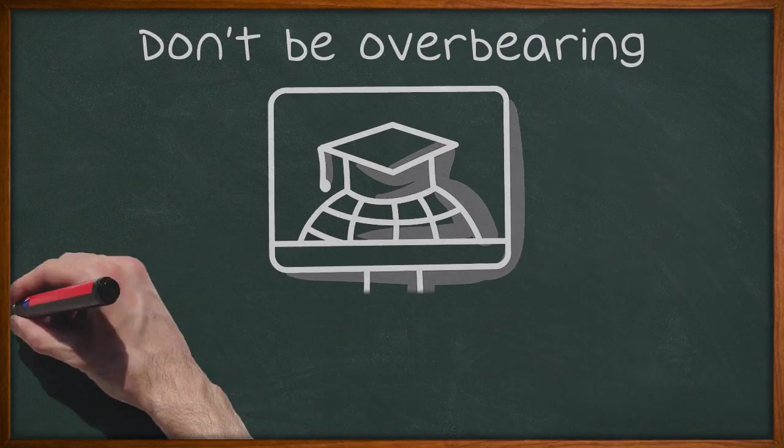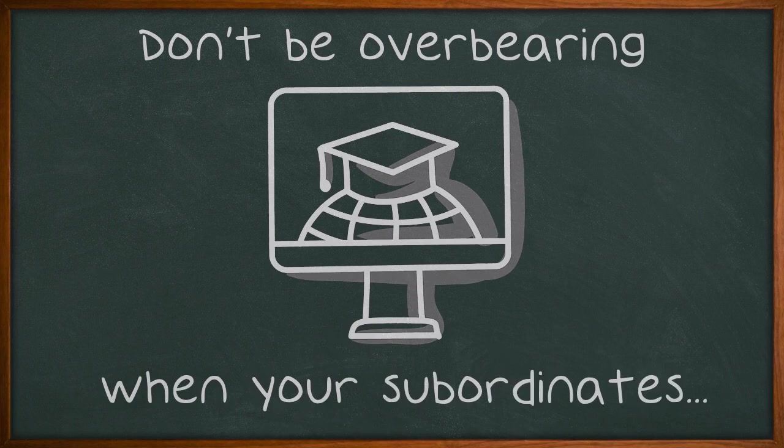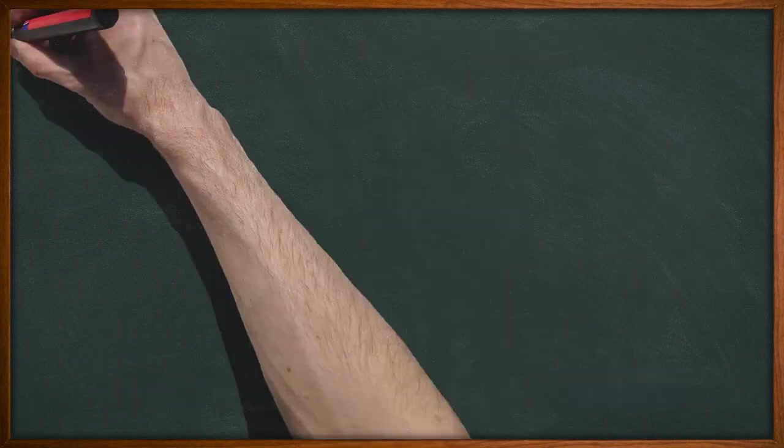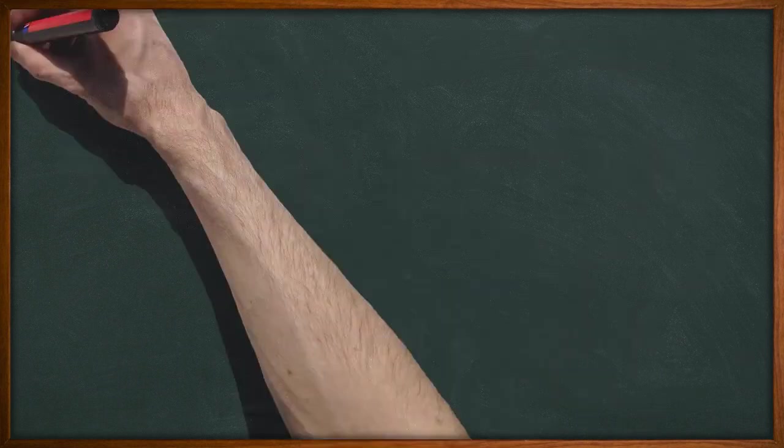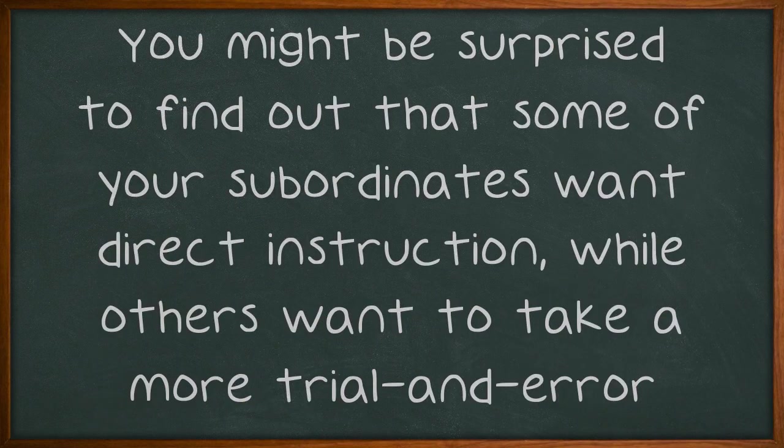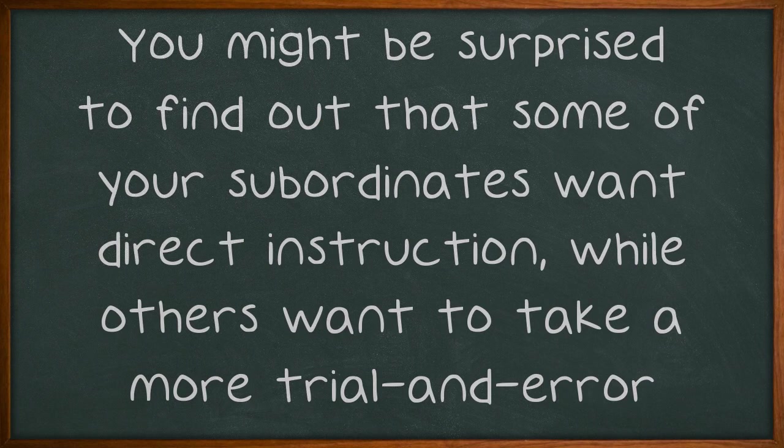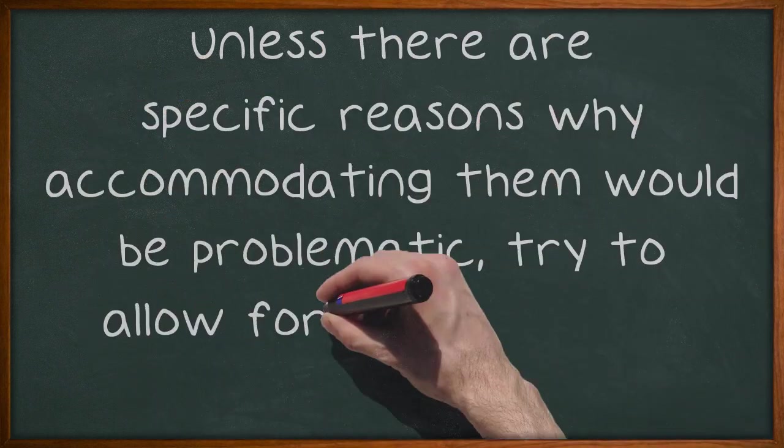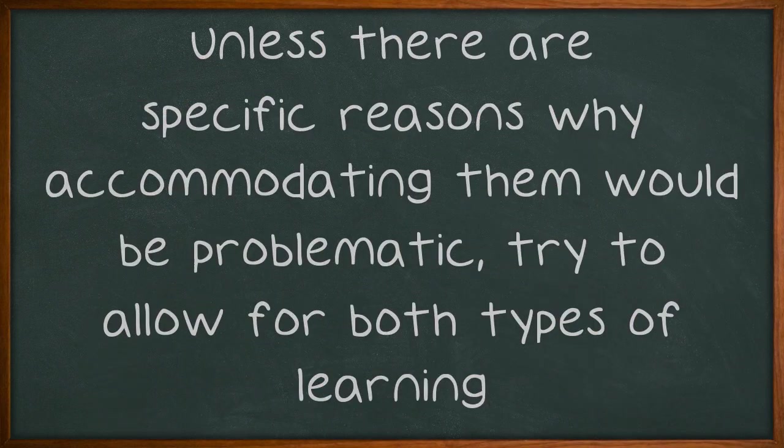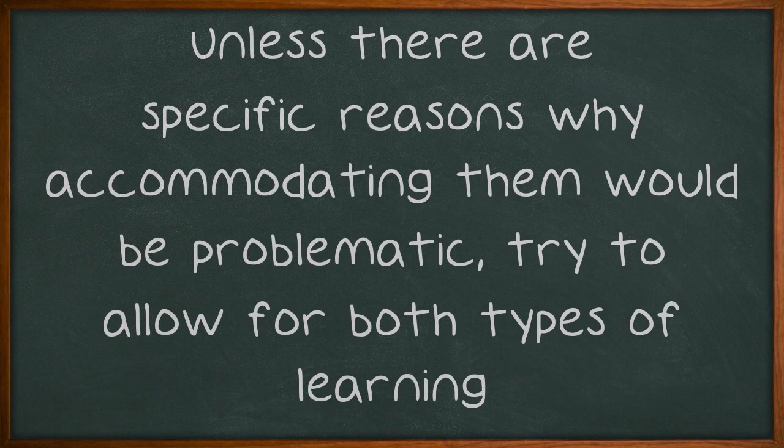Don't be overbearing when your subordinates are learning a new process. Instead, ask them how they learn best. You might be surprised to find out that some of your subordinates want direct instruction, while others want to take a more trial-and-error approach to learning. Unless there are specific reasons why accommodating them would be problematic, try to allow for both types of learning.